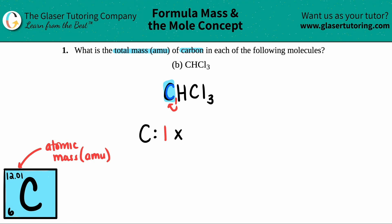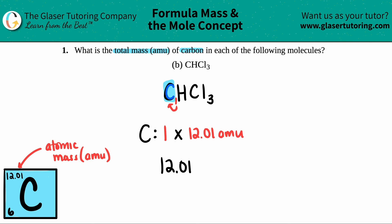All we're going to do is use that number. So I'm going to say one times 12.01 AMU. And that's the end. The total mass is just how many carbons you have times the mass of it — so in this case it's still 12.01 AMU. That's the total mass in AMU of carbon. Pretty simple, right guys?